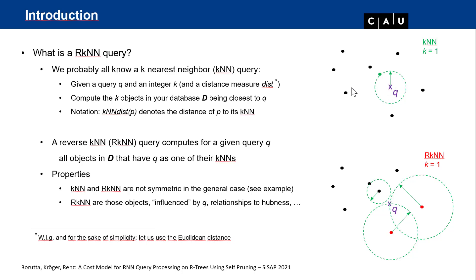We use the following notation: the k-nearest neighbor distance of any object p is the distance to its k-th nearest neighbor. In this example, the 1-nearest neighbor distance of q is the length of the green arrow — the distance to the first nearest neighbor. The next distance would be to the second nearest neighbor, and so on.